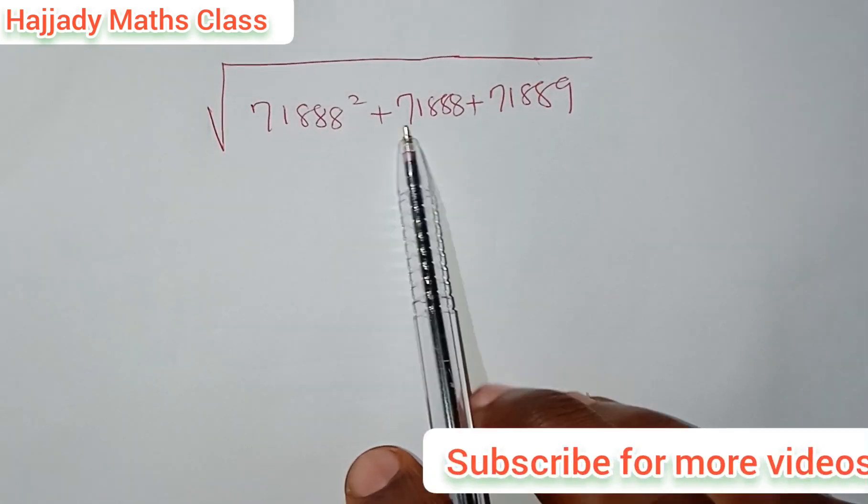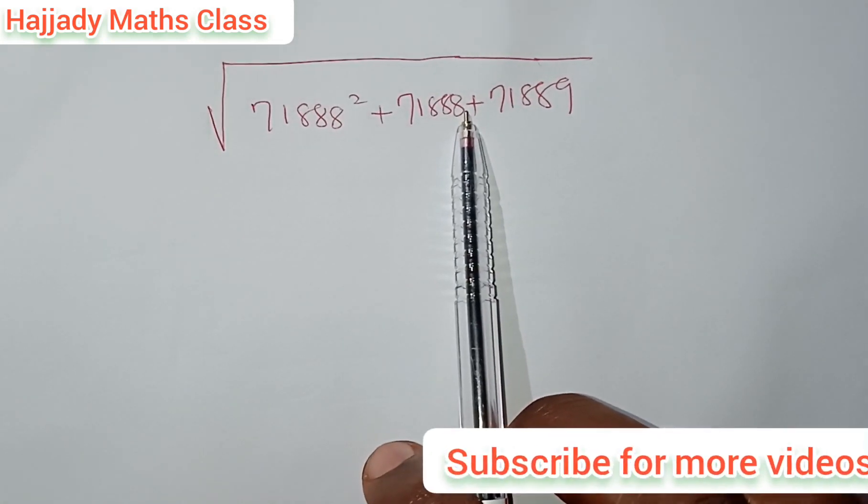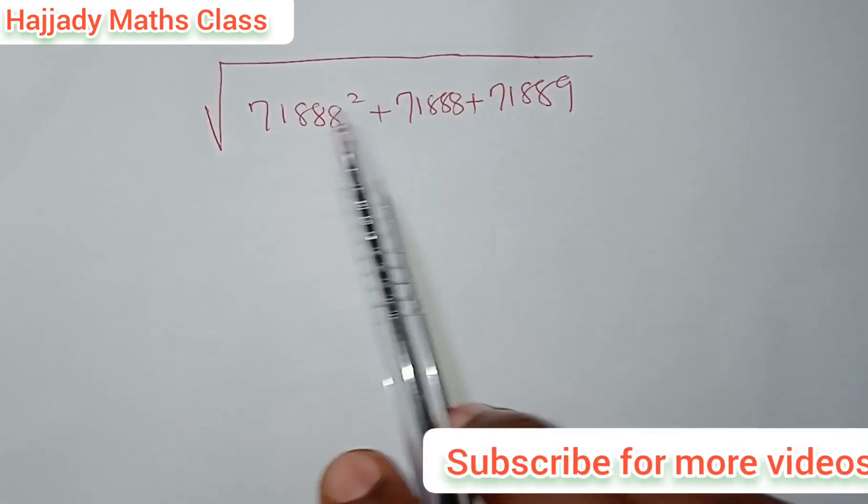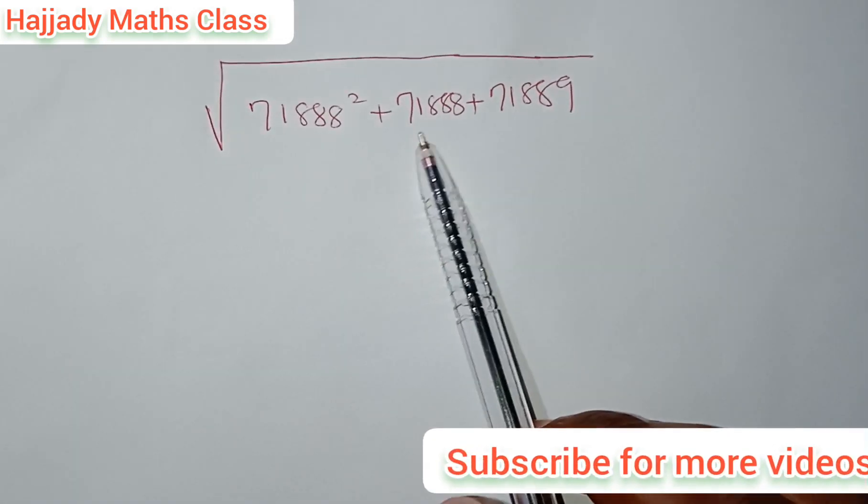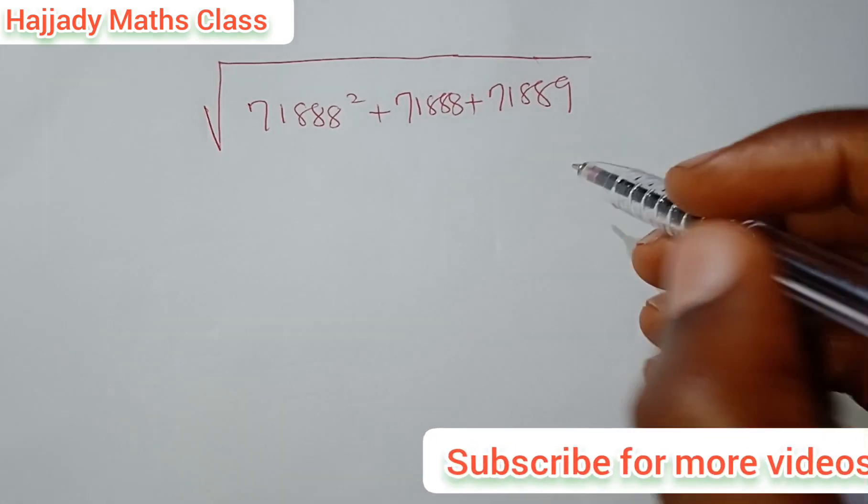Now, we are looking for the square root of this number. You may look at it as if it is somehow cumbersome. And the easiest way to do this, since we see that 71888 is common virtually to everything, you can just say,